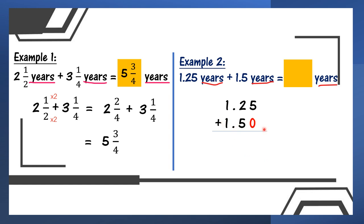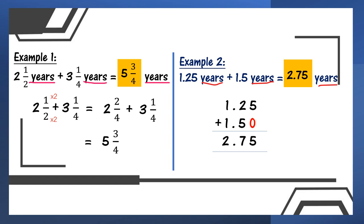When you arrange, be careful — the decimal point must be at the same column. Mesti sebaris ya, titik perpuluhan. And for 1.5, I add a 0 behind to make 1.50. So 5 plus 0 is 5, wait — 5 plus 5 is... let me work through: 5 plus 5 is 0 carry 1... then 2 plus 5 is 7, then 1 plus 1 is 2. So at last I get 2.75 years.